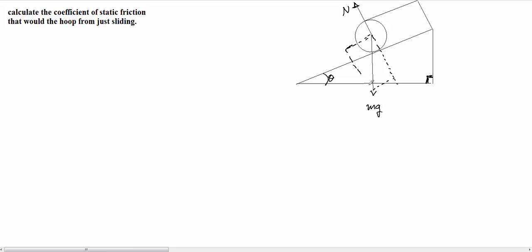So then this component here would be our mg times sine of the angle theta, right? Because our angle here is theta. And because of similar triangles, this angle here is theta. So that's in the y direction on this triangle. And this way, this component here would be mg cosine theta.